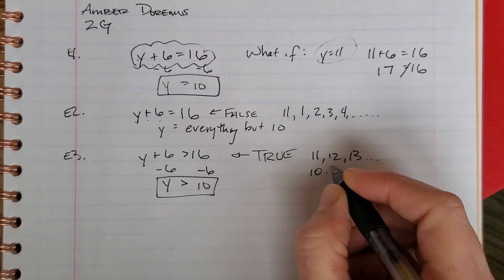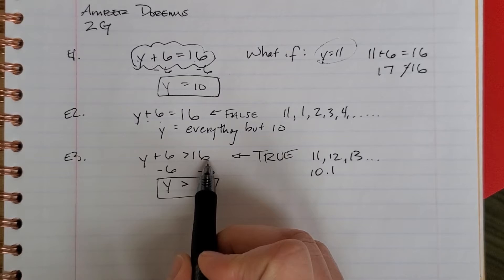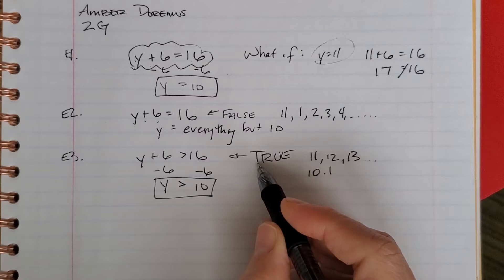Okay, Miss D, you're real smart. What about 10.1? Okay, 10.1 plus 6 is 16.1, which is bigger. Okay, so everything that would make this true are all the numbers that are bigger than 10.